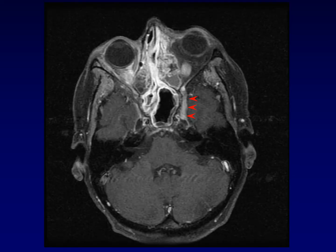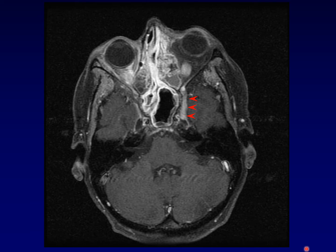Here's another example of perineural spread, this time along V2. Here we are running through foramen rotundum back into Meckel's cave. You can see there's abnormal enhancement right where you'd expect the Gasserian ganglion. The normal configuration of Meckel's cave has been distorted by that anterior tumor spread.